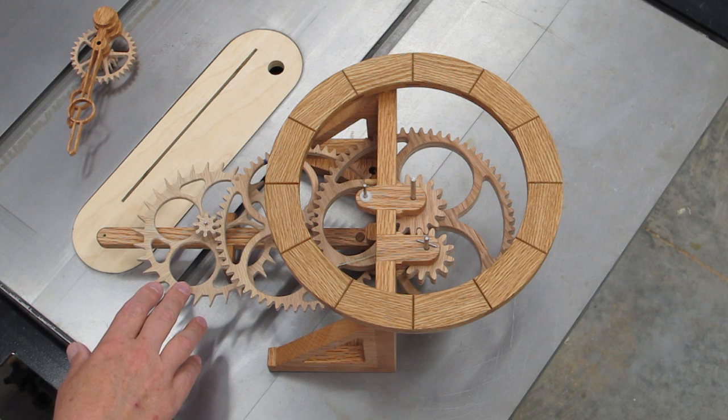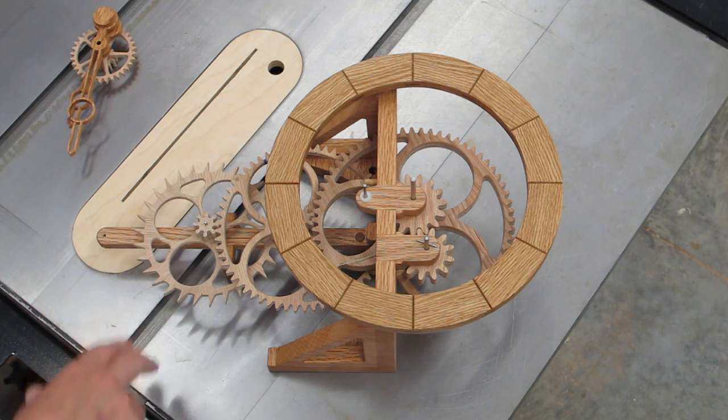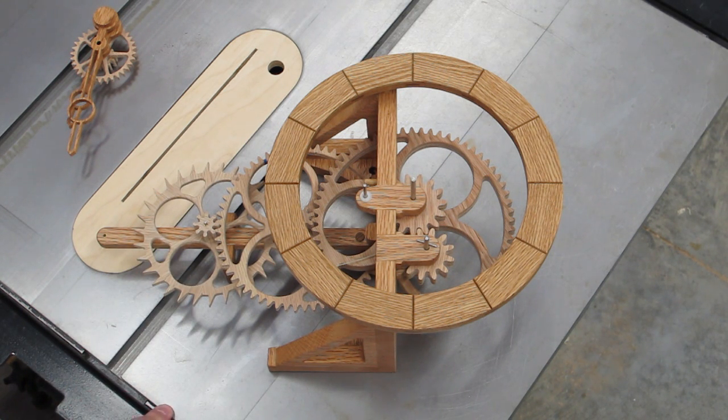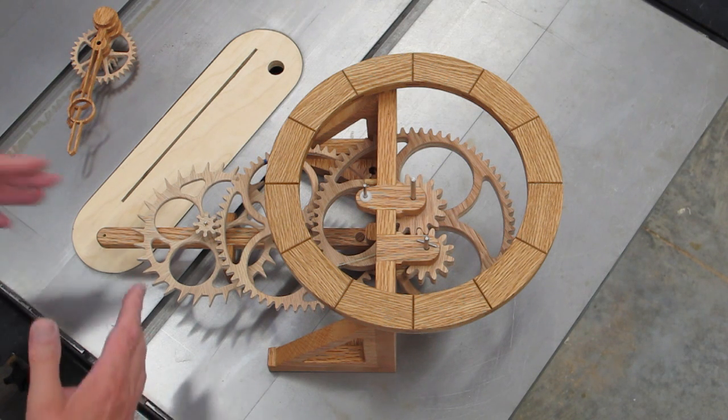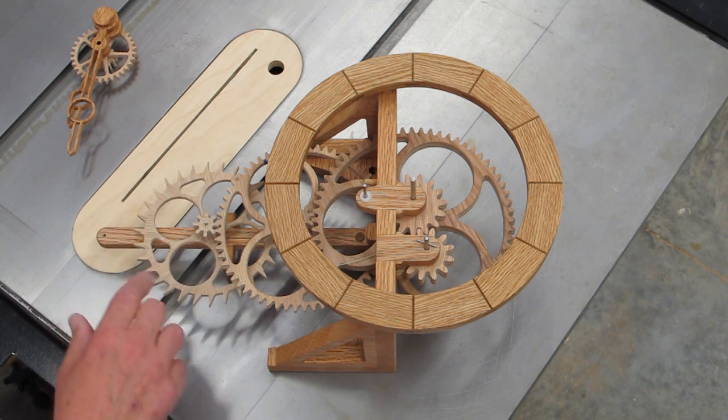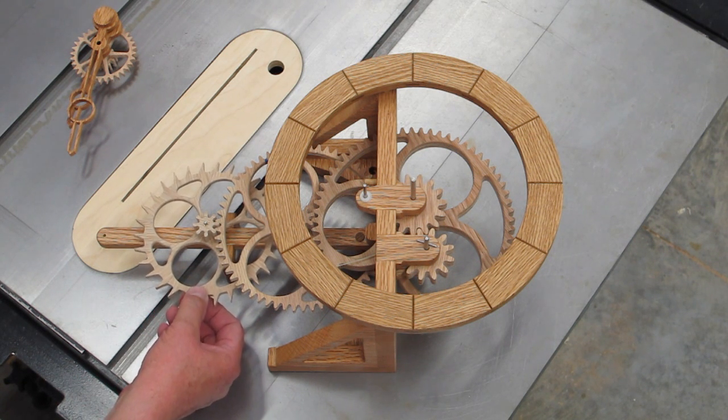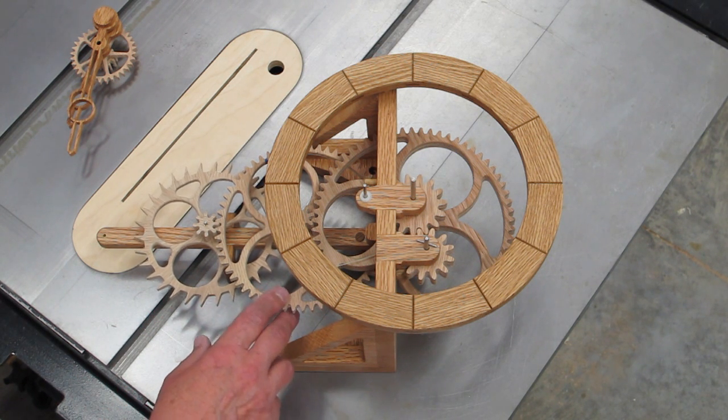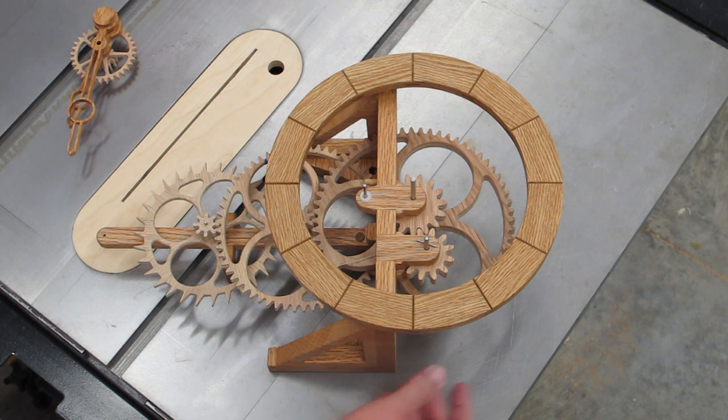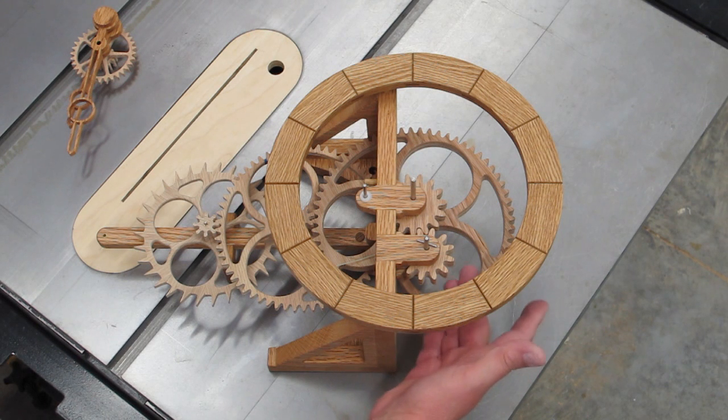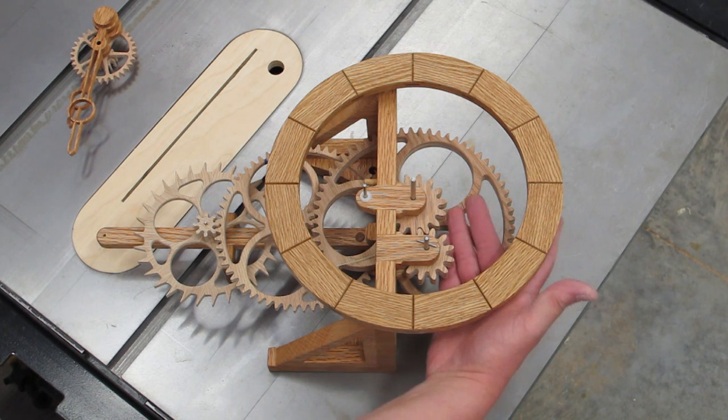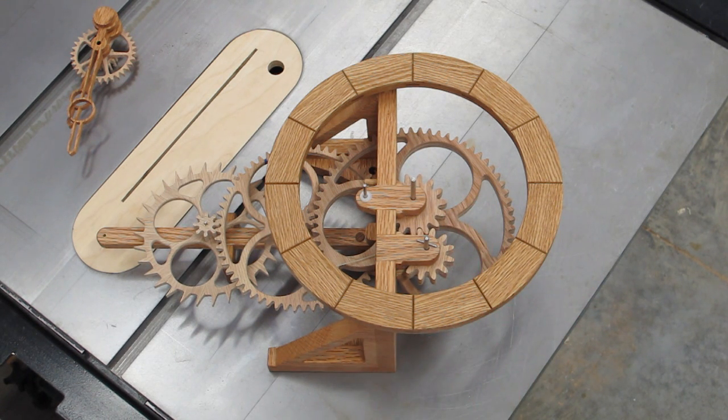The escape wheel I made out of 10 36-degree wedges and glued them together and then put the pattern on there and cut that out. So that's just a piece of quarter inch wood. The third wheel and center wheel are plywood and my two wind-up winding gears, that's just half inch wood, half inch oak.